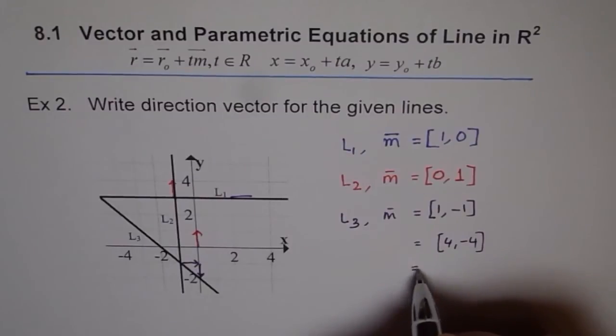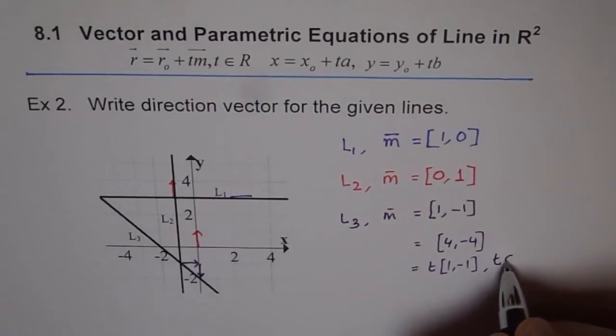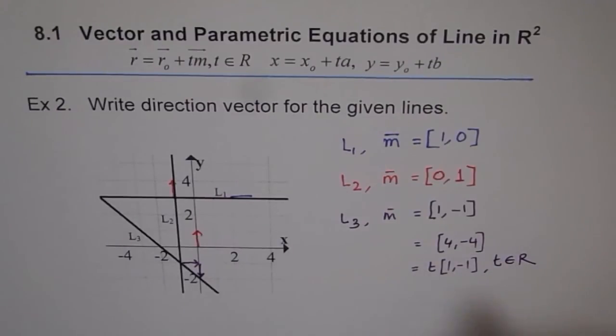In general, I can write this vector as t times [1, -1], where t belongs to real number. So that is my general equation of the direction vector, which I am getting to. So whether the direction vector is this or a scalar multiple of this, it is same. It gives you the same direction.